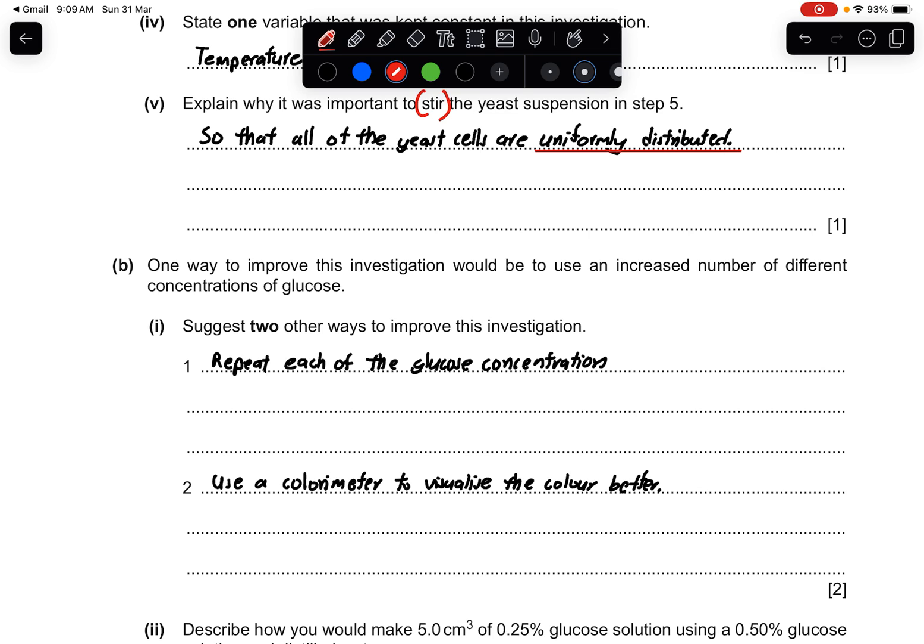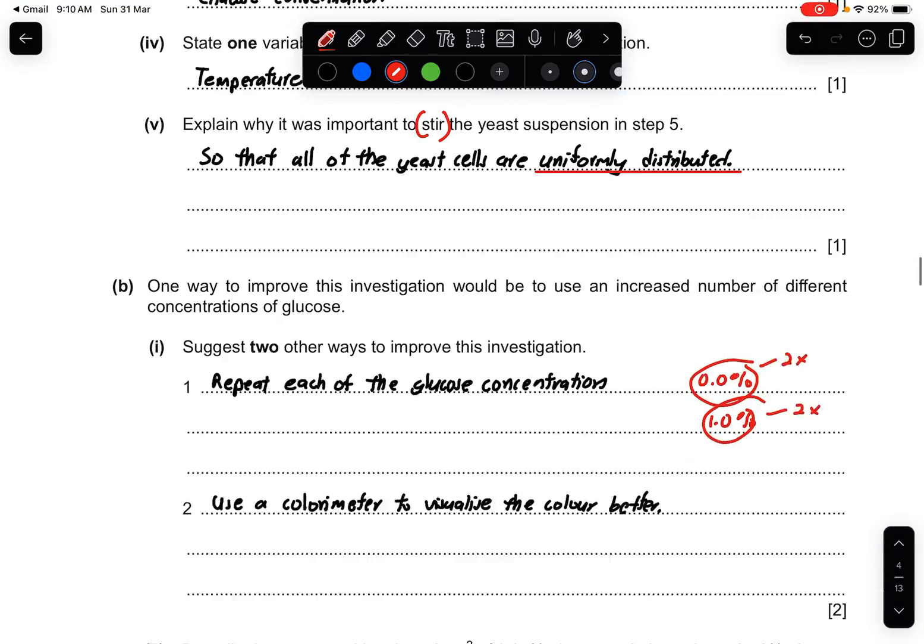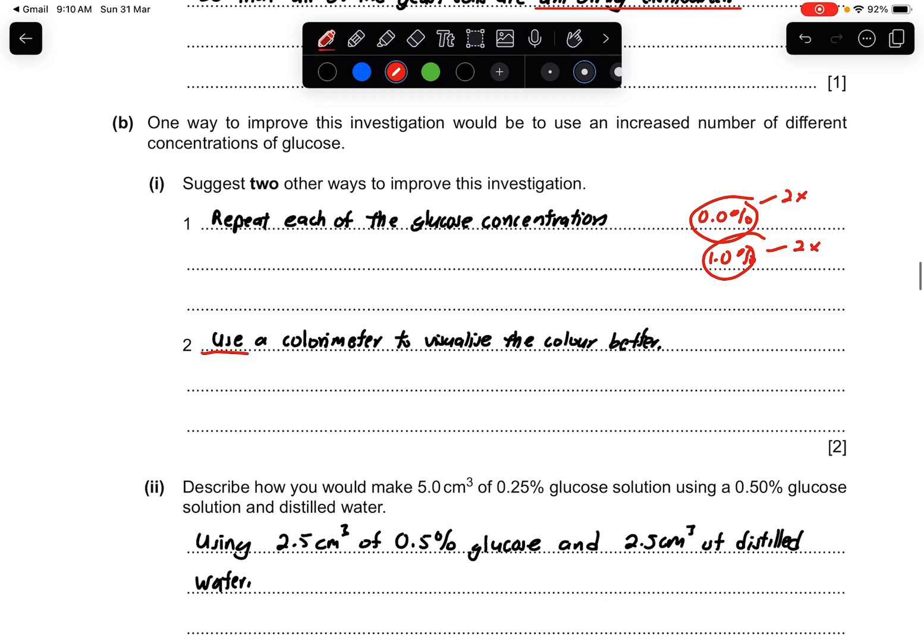Part B: One way to improve this investigation would be to use an increased number of different concentrations of glucose. Part 1: Suggest two other ways to improve this investigation. They say that the first one is to increase the number of different concentrations of glucose. There are other ways that we can also improve - to repeat each of the glucose concentrations added. So for example, we have 0.0%, why not we repeat this two times? If we have a 1.0% glucose concentration, we can also repeat this two times to check whether the result has provided any anomalies. If it's not, then the investigation is fair. Another one is to use the colorimeter so that the color can be visualized better. Whenever there's a question that mentions about color, the change of color, and they ask you for one improvement, always use a colorimeter. Very simple. Then you will get your free one mark from here.